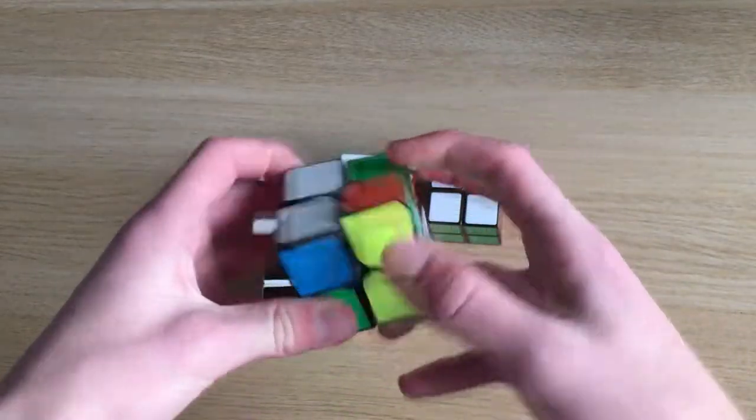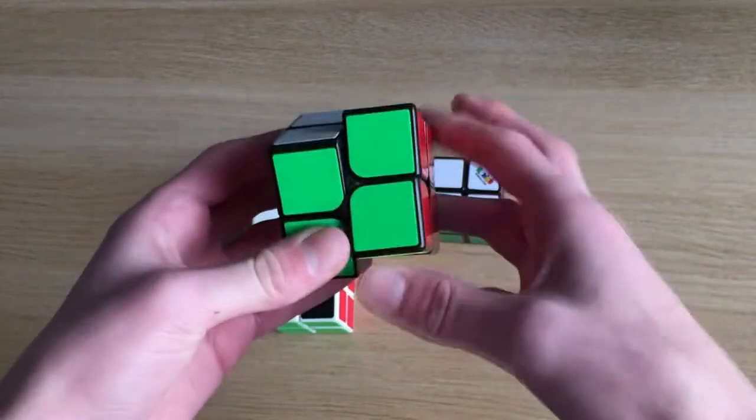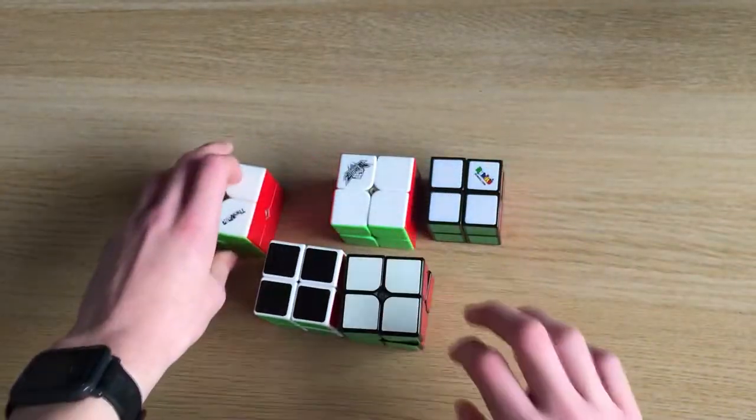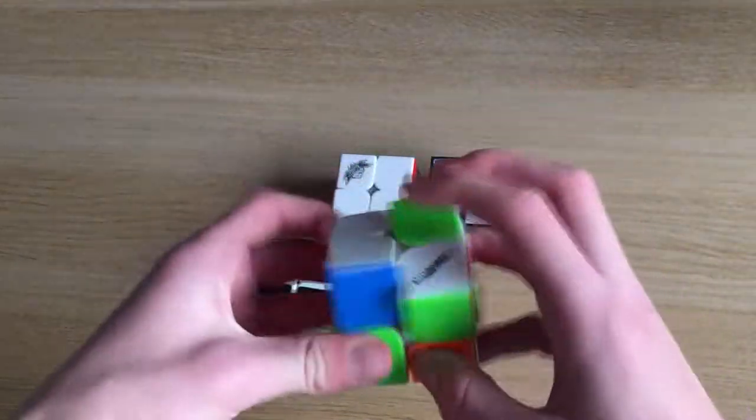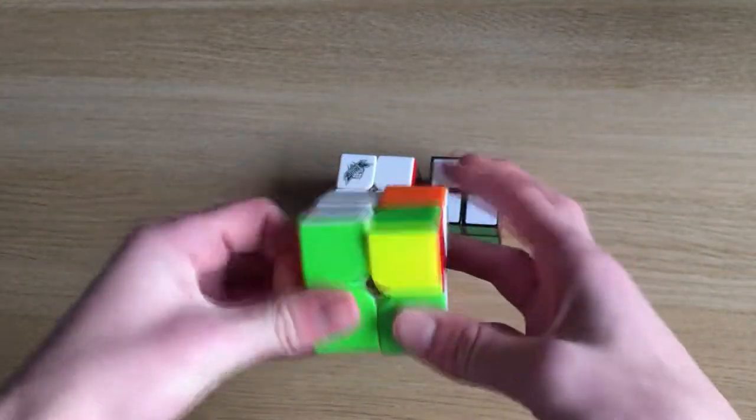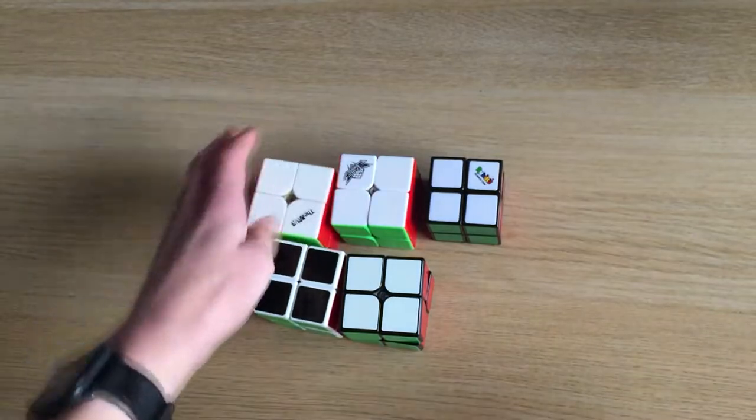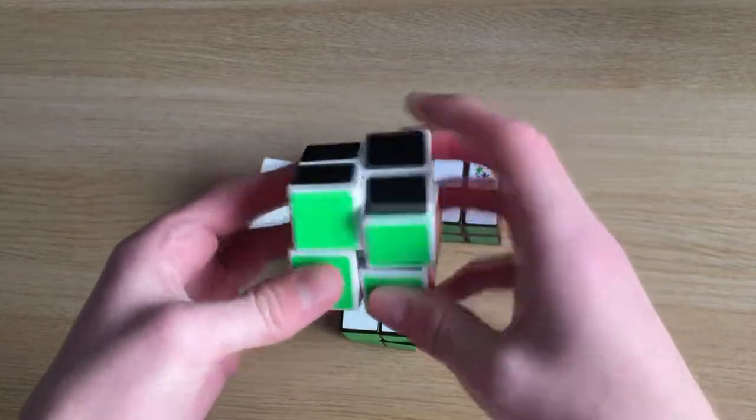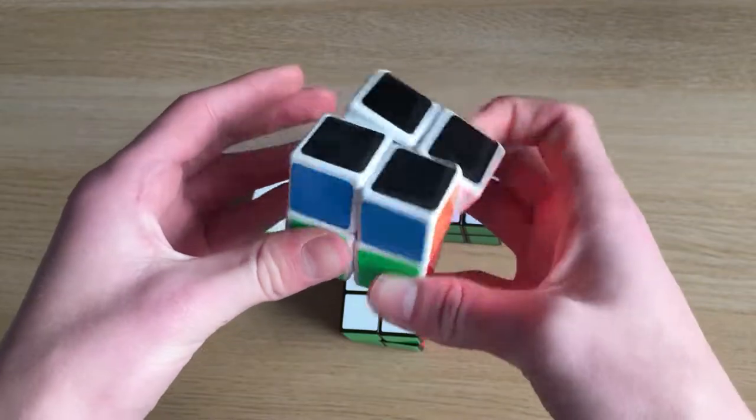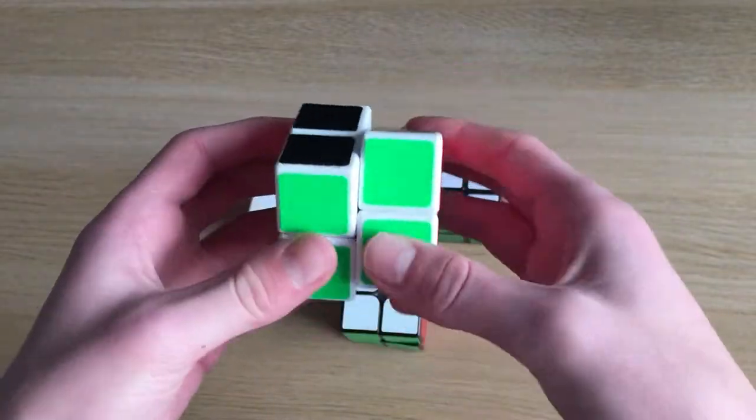And we have the WAPO, which was my main for quite a while. We've got the Volt 2 with MGC Springs, which is my current main. And a white QiYi 2x2. Pretty smooth, but pretty catchy.